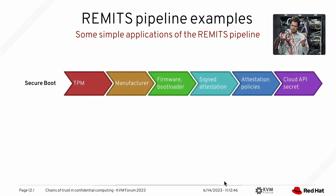An example of REMITS for secure boot: you start with the TPM as root of trust. The endorsement is made by the manufacturer who signed and endorsed the chip. The firmware bootloader is where most measurements occur — measurements of the firmware and bootloader. You expose that through a signed attestation, essentially carrying around a hash. Then you have attestation policies in your provider that decide: do I trust this particular boot? Finally, you release a secret — for instance a cloud API secret — that lets the workload proceed, whether that's a root disk key or a workload key.